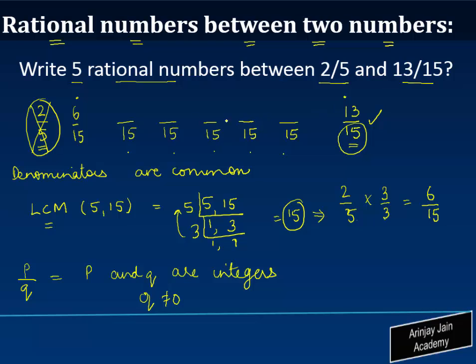The numerator of the numbers which lie between these two has to lie between 6 and 13. So we can write 7 here, 8, 9, 10, 11. Since we had to find out 5 numbers I've given 5. You could have chosen 12, 12/15 as well.